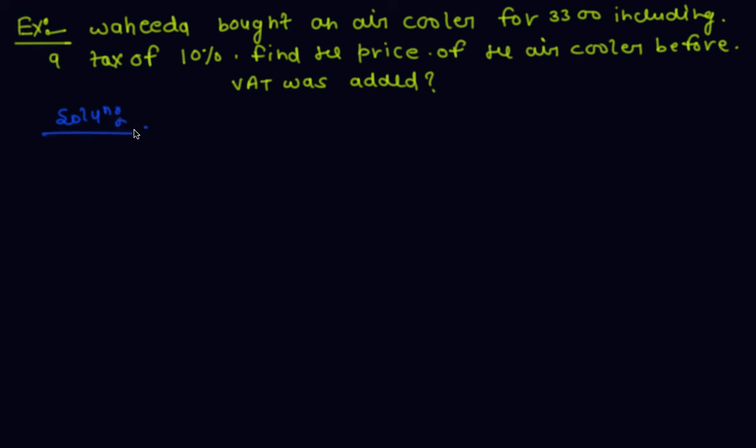In solution, when price is 110, then cost is 100 rupees. If price is 3300, then cost is 100 upon 110 into 3300, which is equal to 3000 rupees.